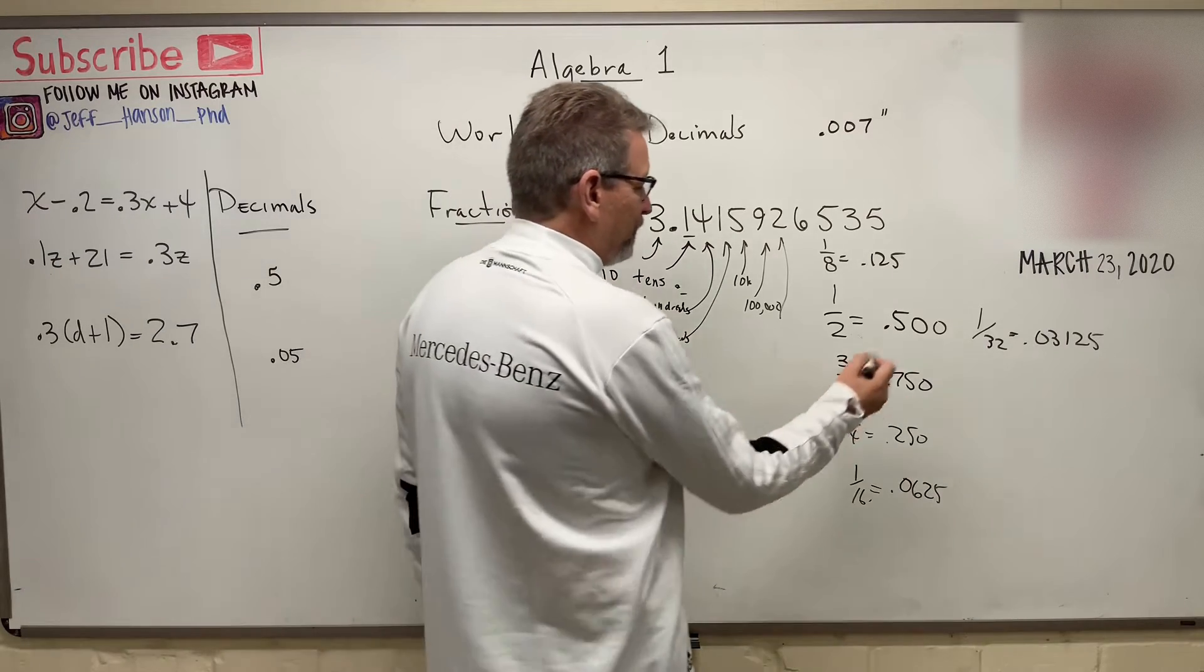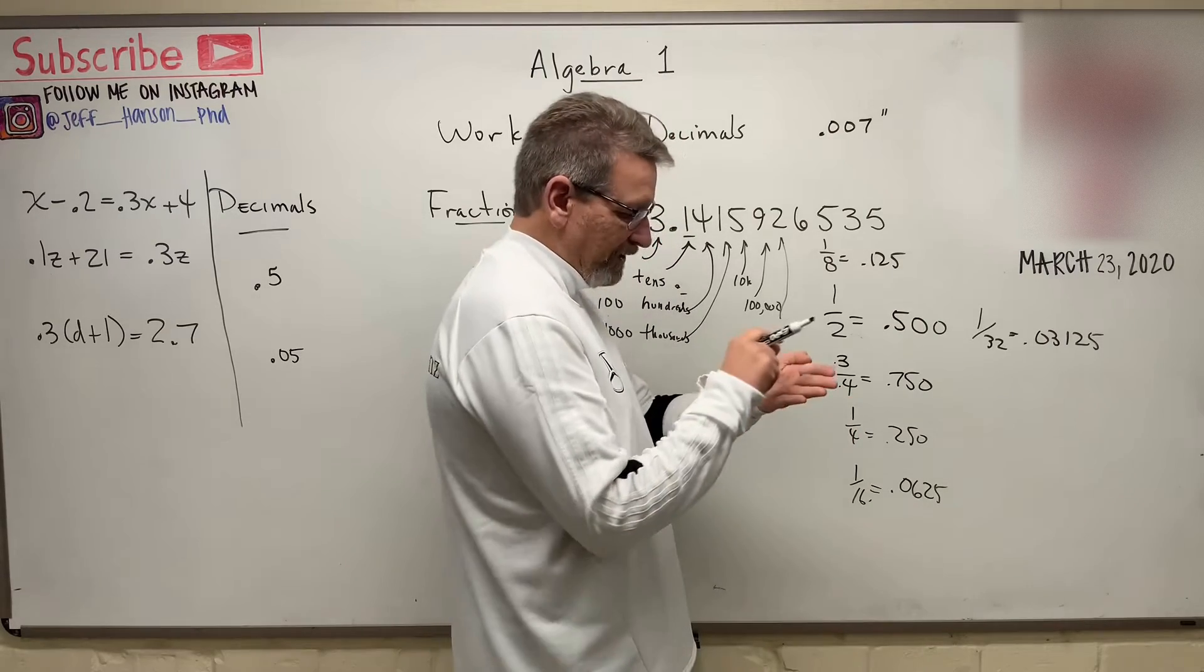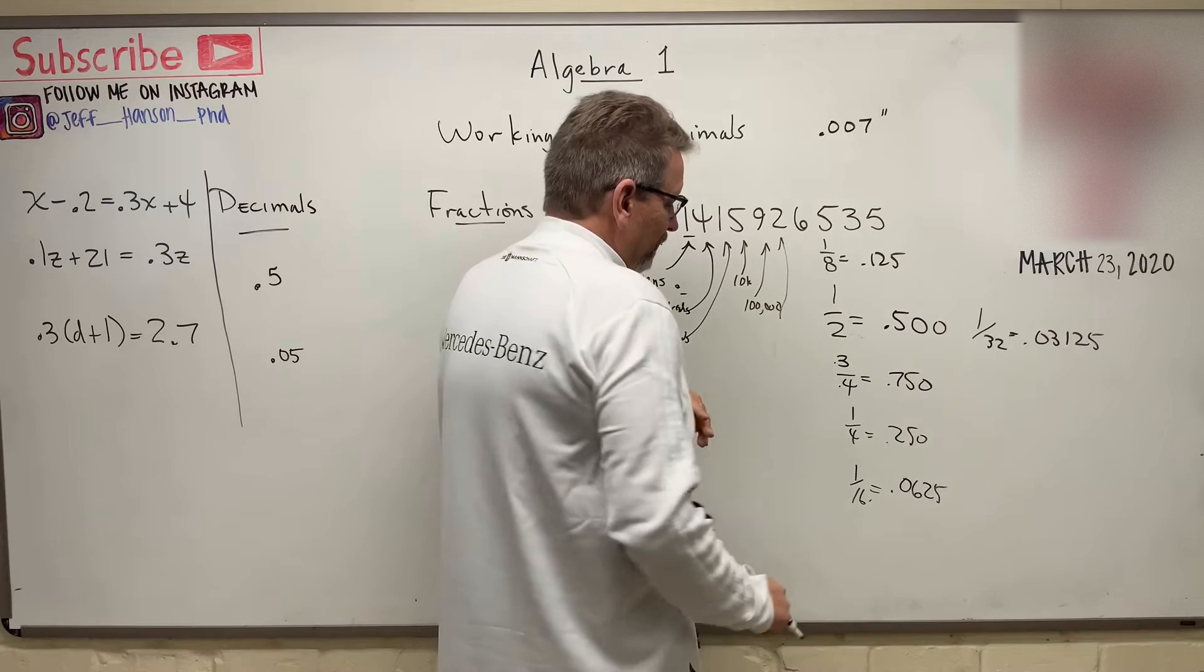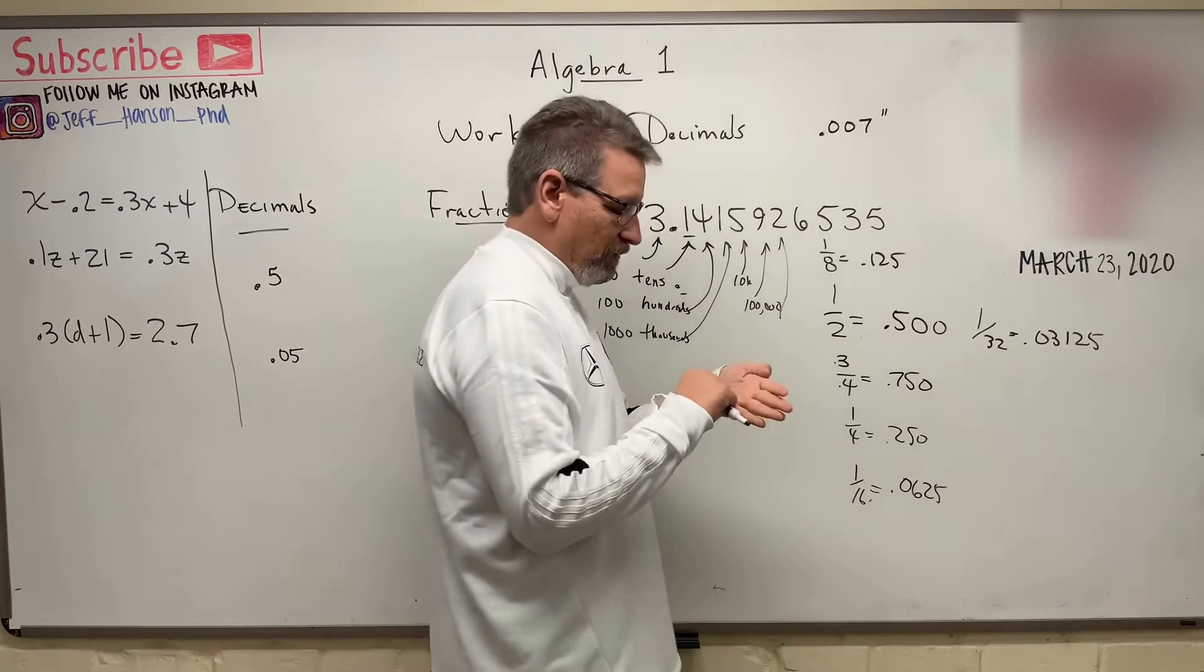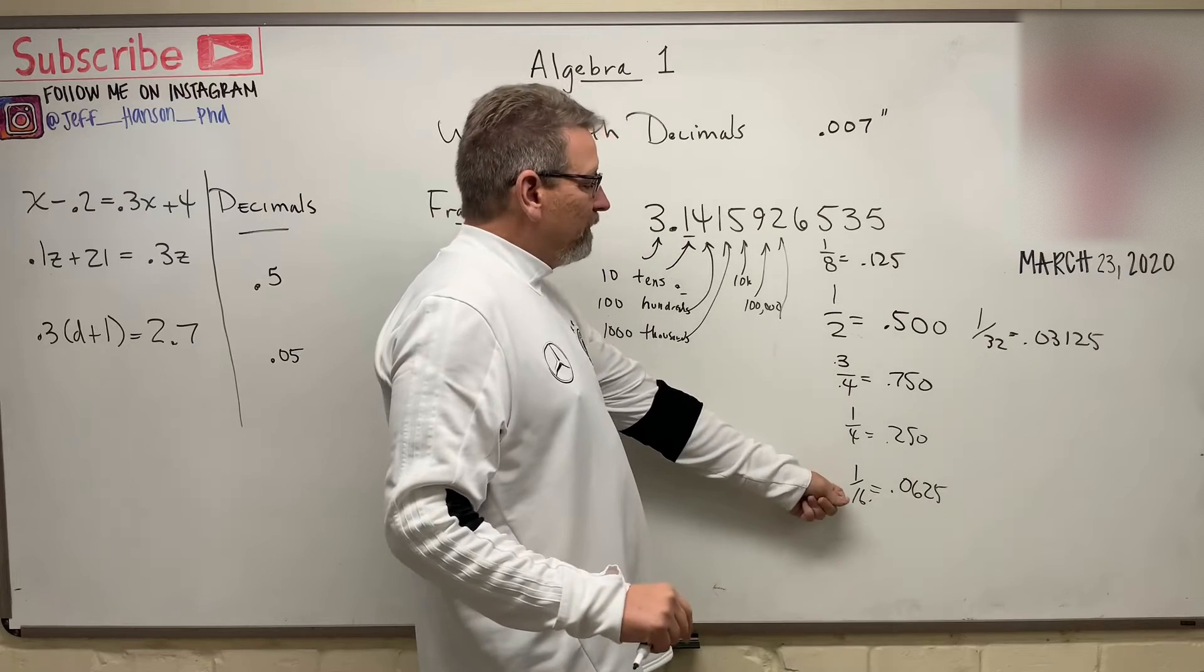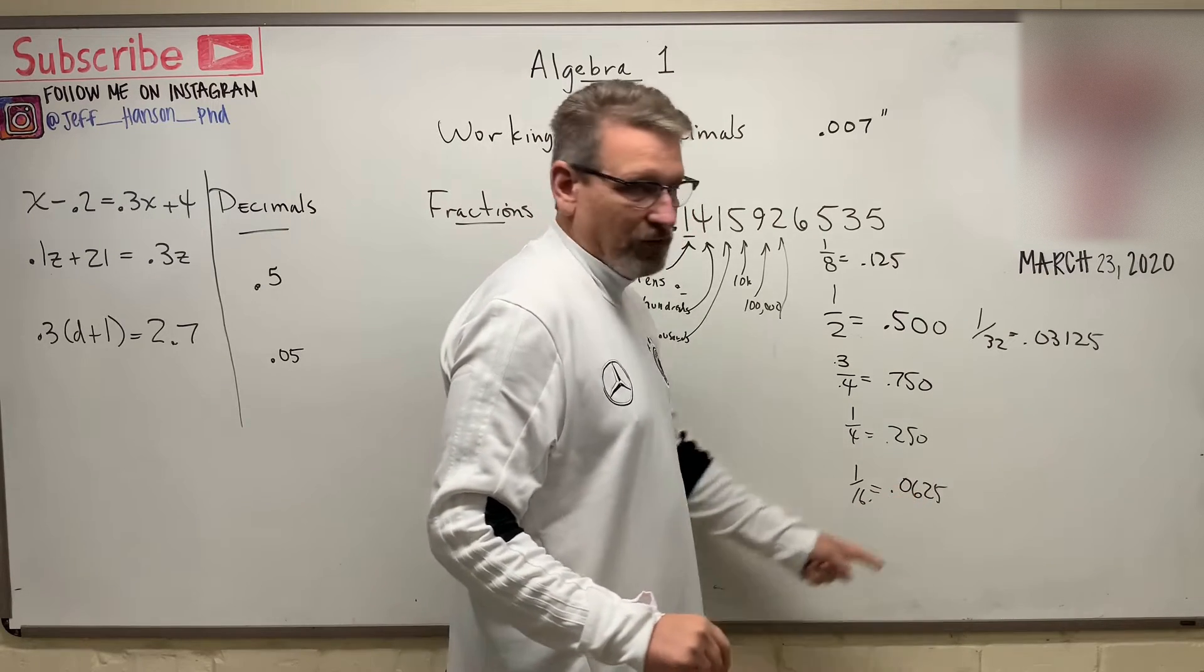Now you can also just do this, put it in your calculator. Three divided by four. Three divided by four in your calculator. Guess what it says? 0.75, right? One divided by 16. What does it say? 0.0625, right? So it's easy to calculate or convert from fractions to decimals.